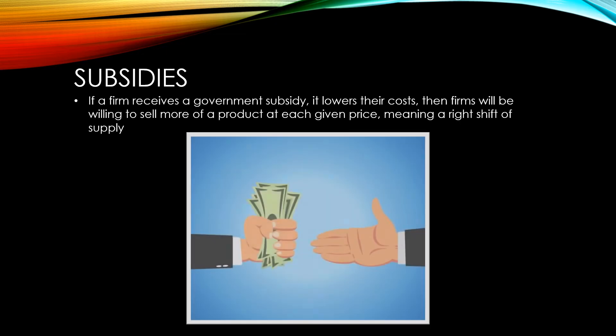If a firm receives money from the government in the form of a subsidy, it effectively lowers their costs. This will mean that these firms will be willing to sell more of a product at each given price, meaning a right shift of supply. Part of the UK government's gigabit broadband commitment is to provide subsidies to firms to help enable broadband to reach regional areas.